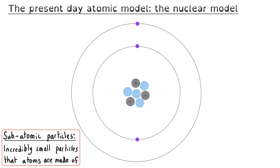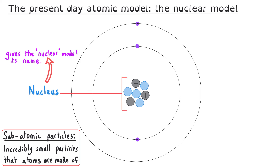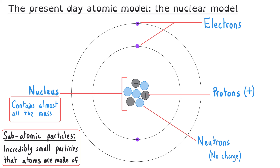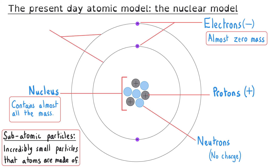Our current model of the atom is called the nuclear model. In this model we have a small central nucleus where we find the positive protons and the neutrons which have got no charge. Together these subatomic particles make up almost all of the mass of an atom. Orbiting the nucleus is the final subatomic particle, the electron. These electrons have a negative charge and almost no mass, and we find them in specific orbits called energy levels or shells.